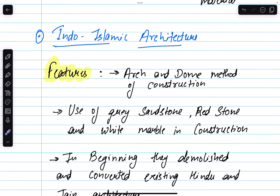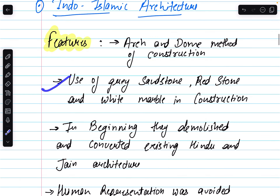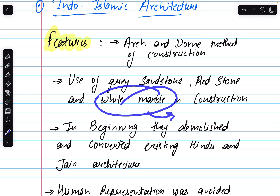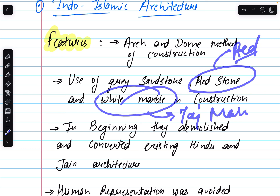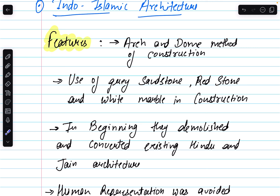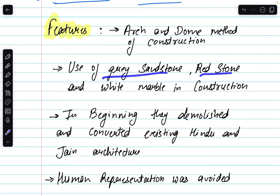Coming to the Indo-Islamic architecture introduction, the primary features are: first, the presence of arches and domes — the archaic and dome method of construction which was introduced through Islamic architecture. Second, the beginning of the use of grey sandstone, red sandstone and white marble in construction. As we know, white marble is seen in the famous Taj Mahal and red stone in the Red Fort. The construction material differed significantly compared to ancient Nagara and Dravidian styles.